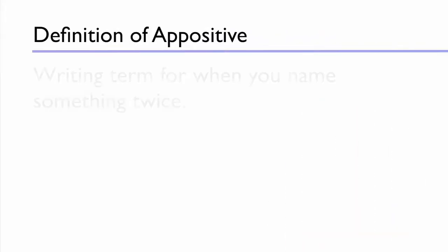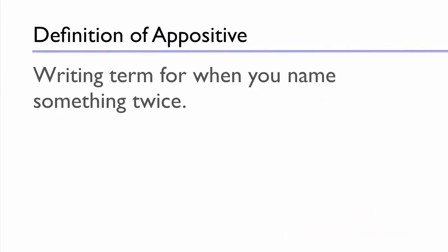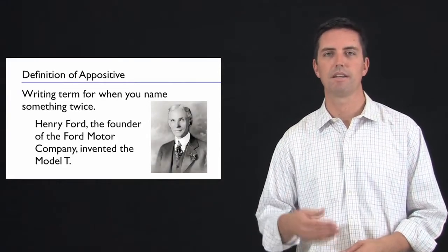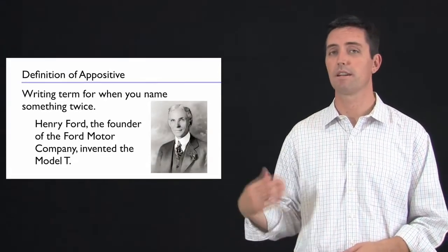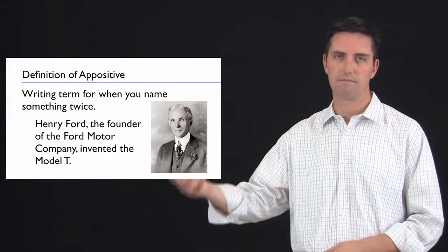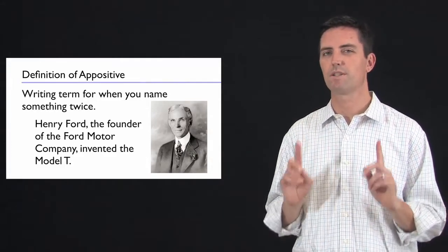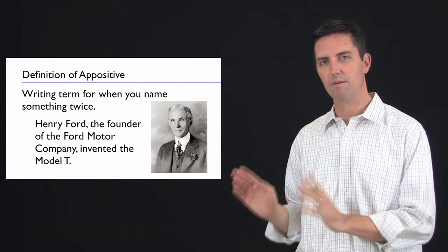The true definition of an appositive is when you name something twice. So when you say, Henry Ford, comma, the founder of Ford Motor Company, comma, invented the Model T. I just named Henry Ford twice, once by name and once by job.